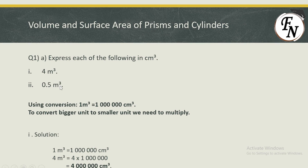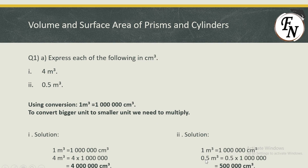For part two, 0.5 meter cube also needs to be converted to centimeter cube. Since 1 meter cube is 1,000,000 centimeter cube, 0.5 meter cube is multiplied by the same conversion unit, and we have got 500,000 cm³. So these were similar questions converting meter cube into centimeter cube.